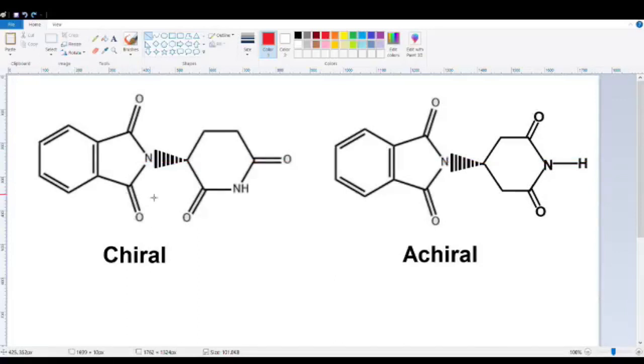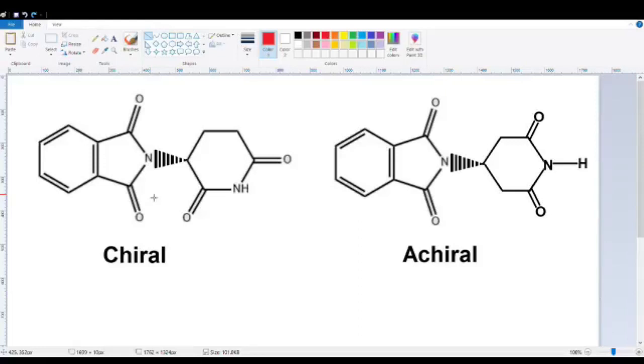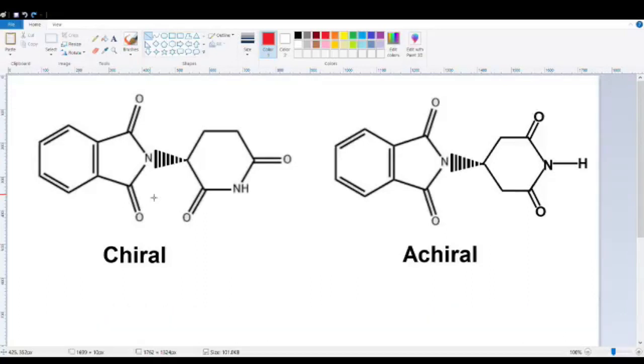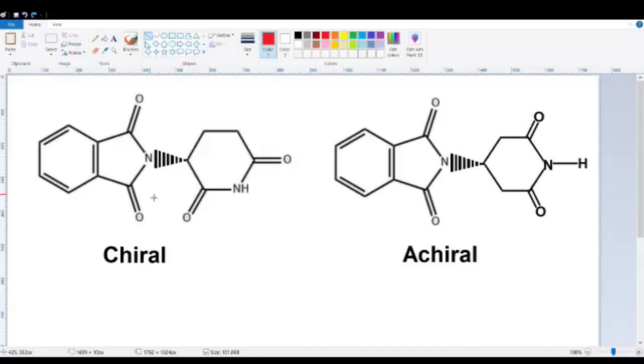Here we cannot draw a line that gives us a symmetrical division of this molecule. It's impossible. Therefore the molecule is chiral. Everybody see that? So now you've got multiple tests that you can use. Is it bonded to two of the same thing? It's not chiral. Does it have a plane of symmetry? It's not chiral. I think now you should be pretty well armed to be able to identify chiral carbons.